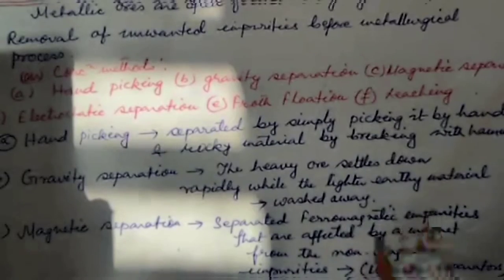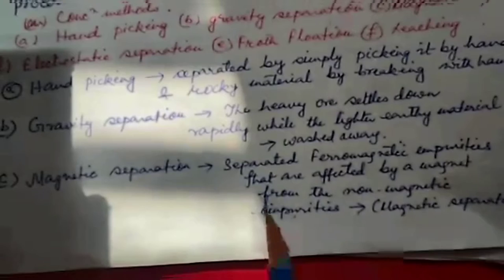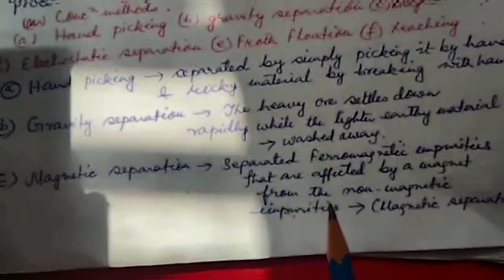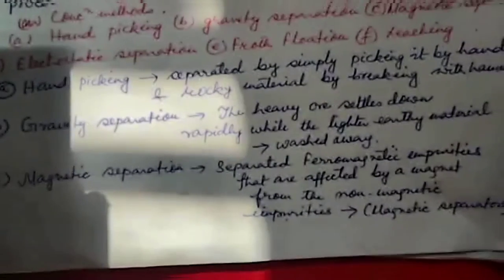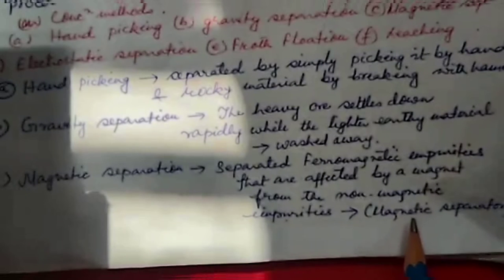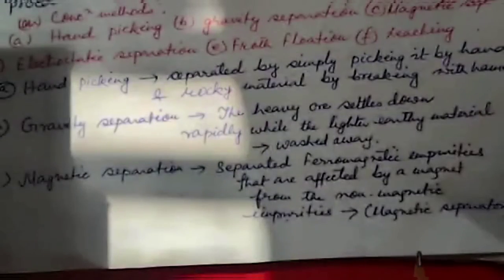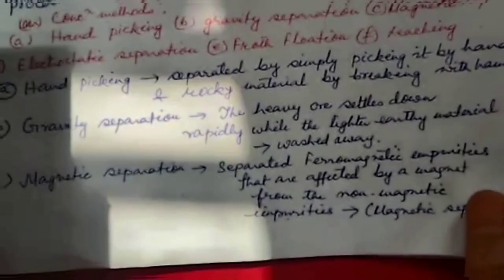Magnetic separation: Ferromagnetic ores, that is iron ores, are affected by a magnet and are separated from the non-magnetic impurities by means of magnetic separation.